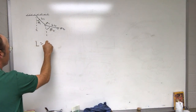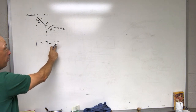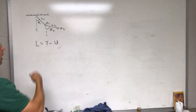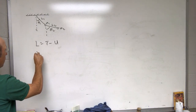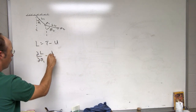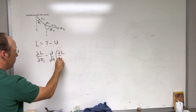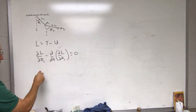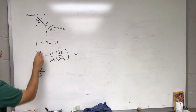The Lagrangian says L equals T minus U, where T is the total kinetic energy and U is the potential energy. With variables theta 1 and theta 2, I have the Euler-Lagrange equations: the partial of L with respect to theta 1, minus the time derivative of the partial of L with respect to theta 1 dot, equals zero — and the same thing for theta 2.